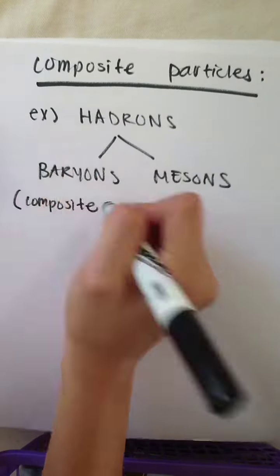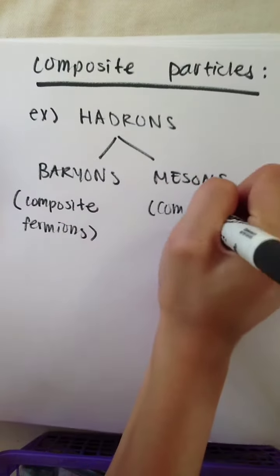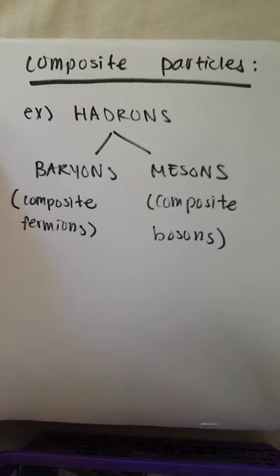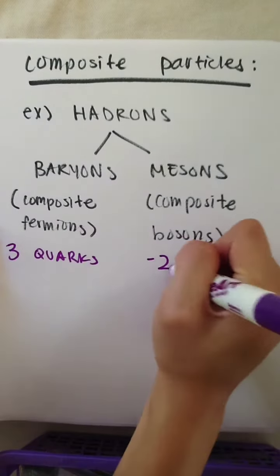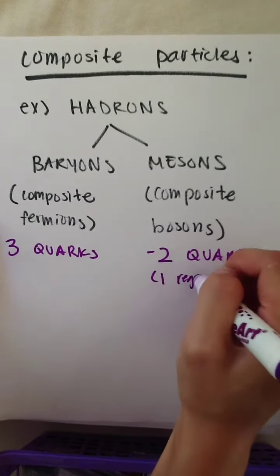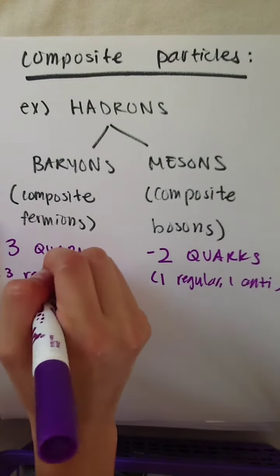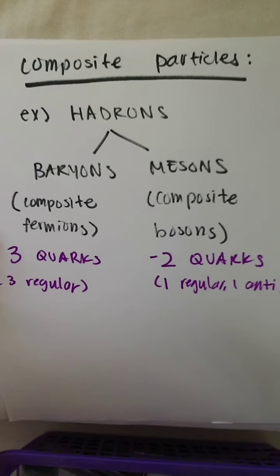Baryons are fermions made of three quarks, such as the proton and neutron. Although we talked about all fermions having half integer spins, we know that the proton has a positive one charge, while the neutron is neutral. This is possible because the two up quarks and one down quark in the proton have charges of two-thirds, two-thirds, and negative one-third, which when added together equals one. The neutron is made of one up quark and two down quarks, the sum of which is zero.